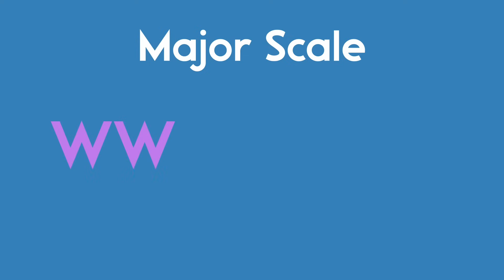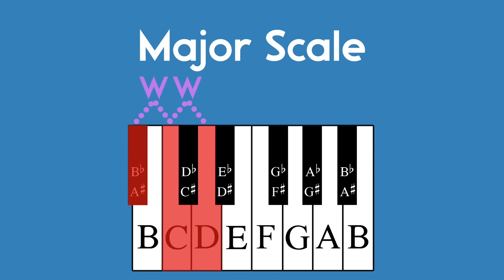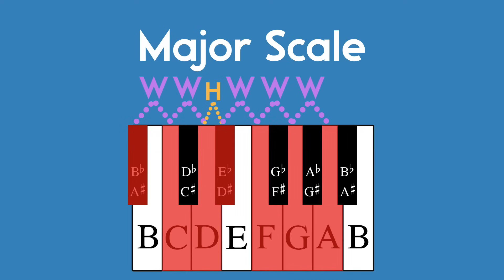Let's move on to the major scale. The major scale is made up of whole steps and half steps in a particular order. That order is: whole, whole, half, whole, whole, whole, half. So if we start on B flat and go up a whole step, whole step, half step, whole step, whole step, whole step, half step, we have the B flat major scale.